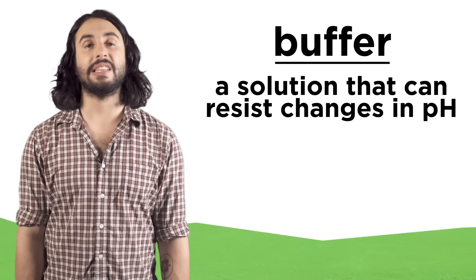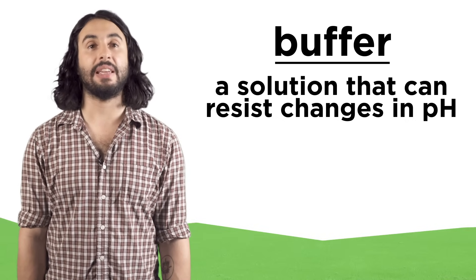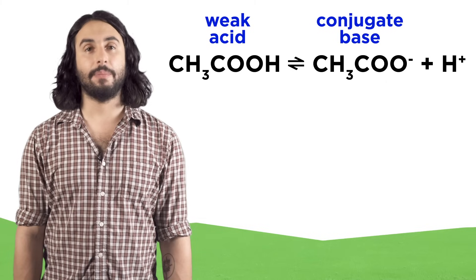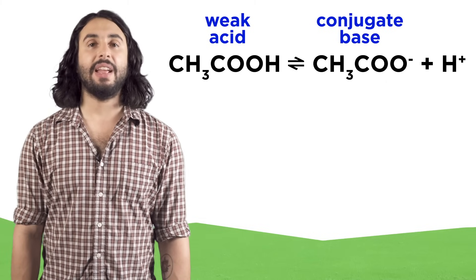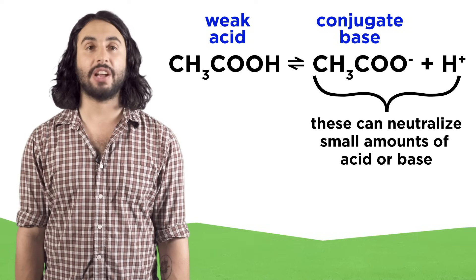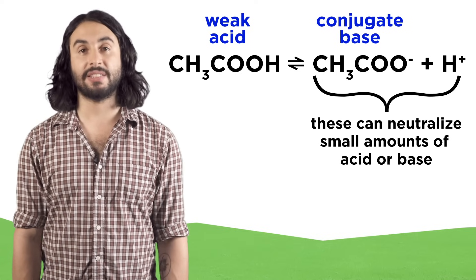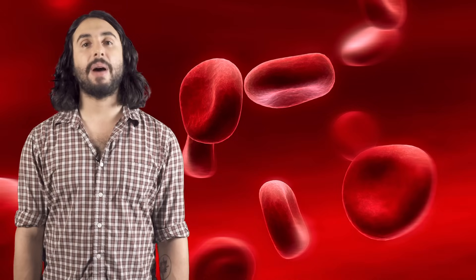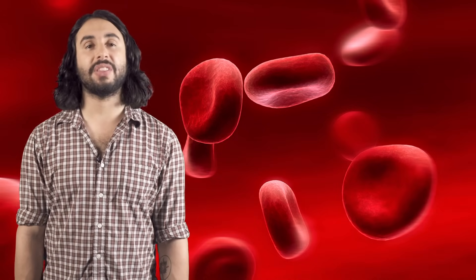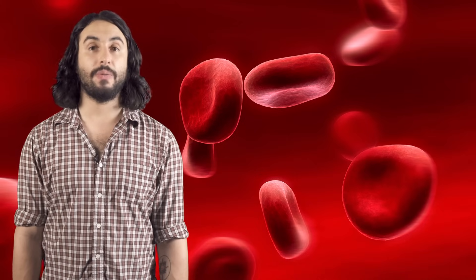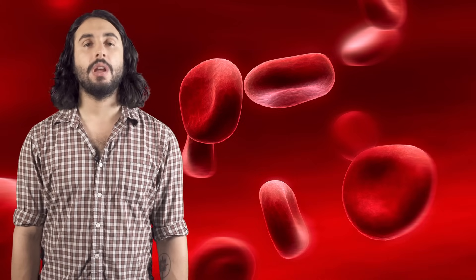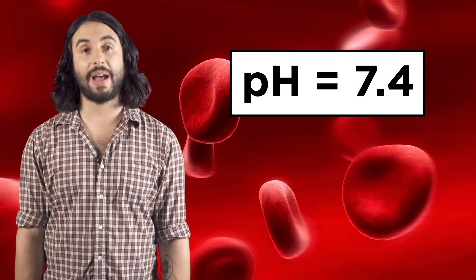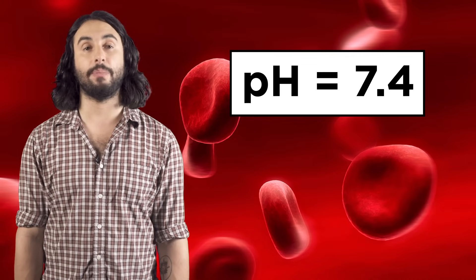A buffer is a solution that has the ability to resist changes in pH when limited amounts of acid or base are added to it. Buffers are made by combining a weak acid or base with its conjugate. In such a solution, because both the acid and conjugate base are present, they are able to neutralize small amounts of any acid or base added to the solution. Many biological fluids are buffer solutions because they must maintain a steady pH to avoid loss of critical biological function. The bloodstream, for example, maintains a pH of around 7.4 — otherwise its capacity to carry oxygen around the body would be lost.